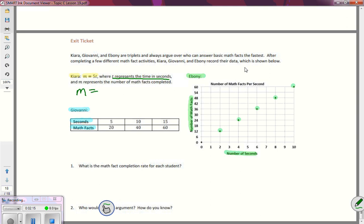...is equal to five times the amount of seconds. So if I make my seconds be one second, my per one to get the unit rate, five times one is equal to five math problems. So five is equal to five.